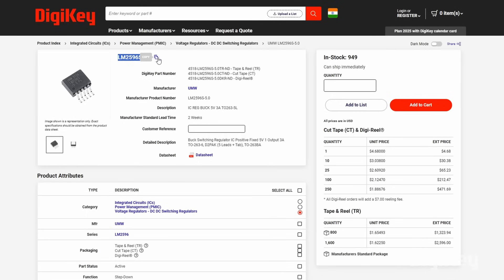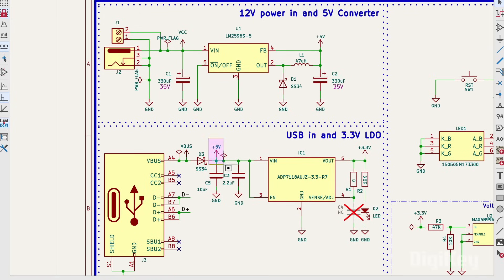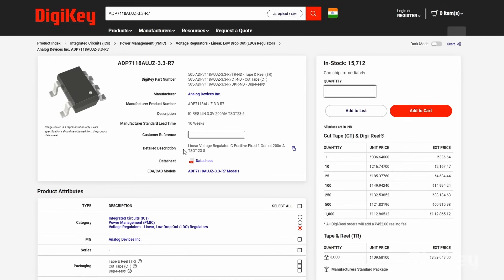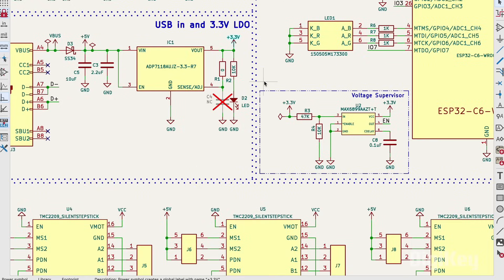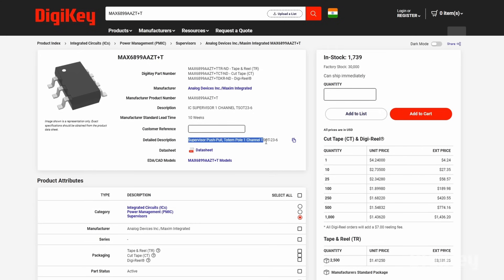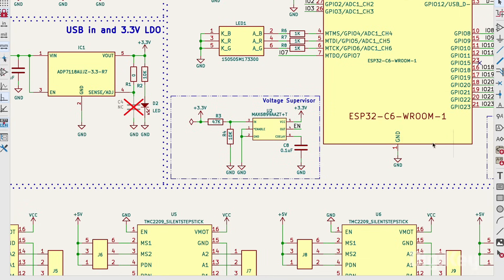Then we have the LM2596 switching regulator IC that can provide a fixed 5V output. This fixed 5V is also given to the ADP711 linear voltage regulator which outputs 3.3V for the ESP32 SOC. And we also have MAC6811 voltage supervisor IC here for making sure the ESP32 SOC boots up properly.